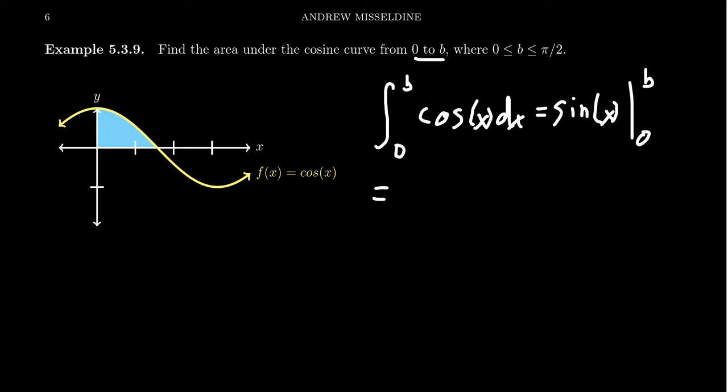And so when you plug that in there, you're going to get sine of b minus sine of 0. And then, well, sine of 0 is just 0. So that actually is just going to disappear. And so the area under the cosine function is just going to be sine of that number b.